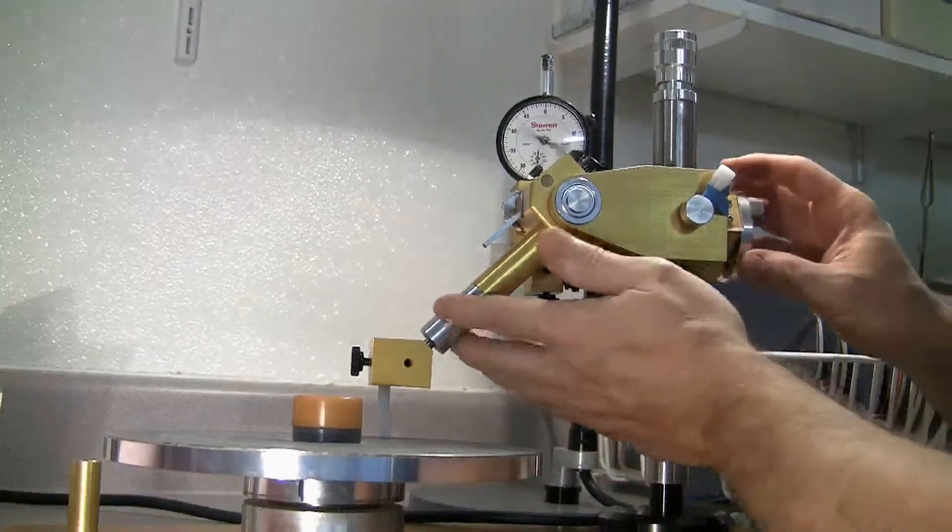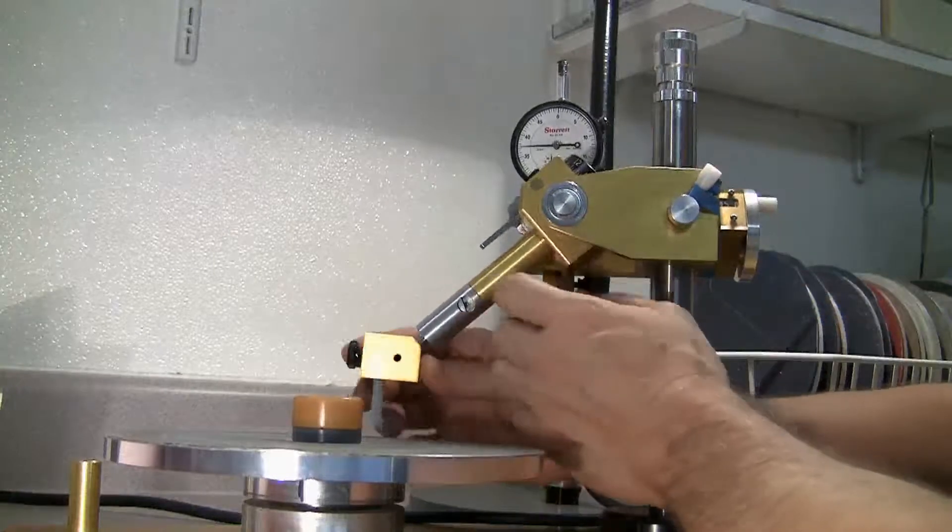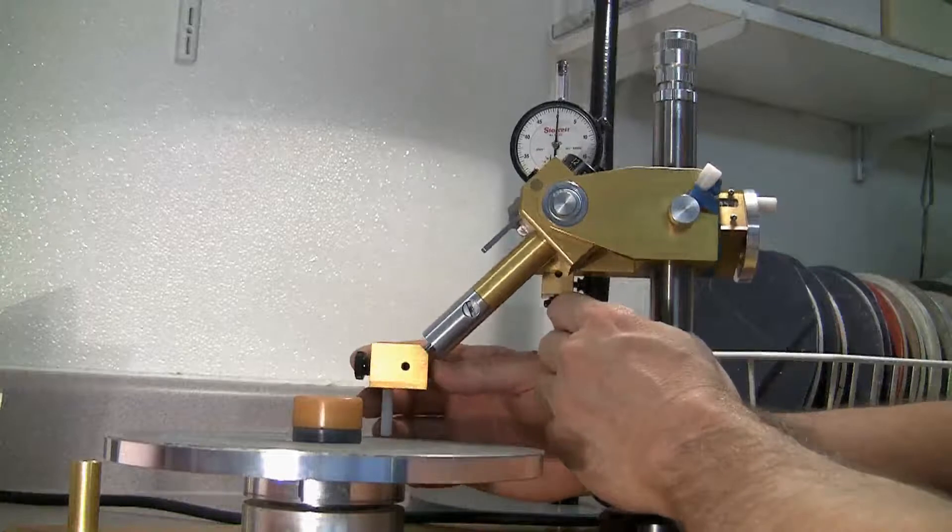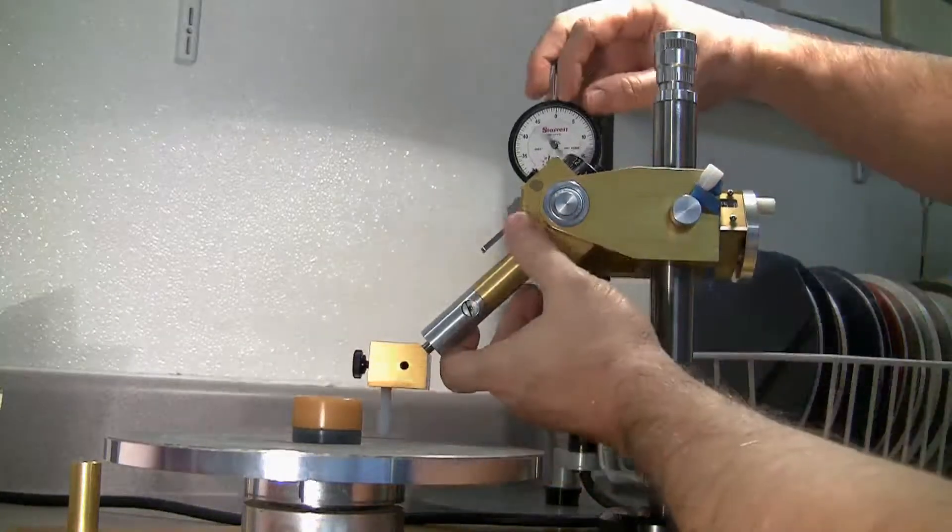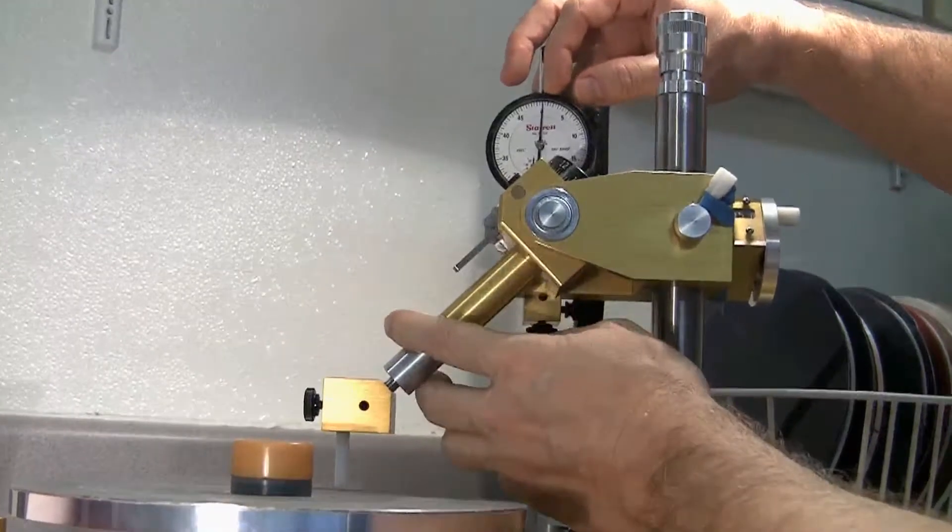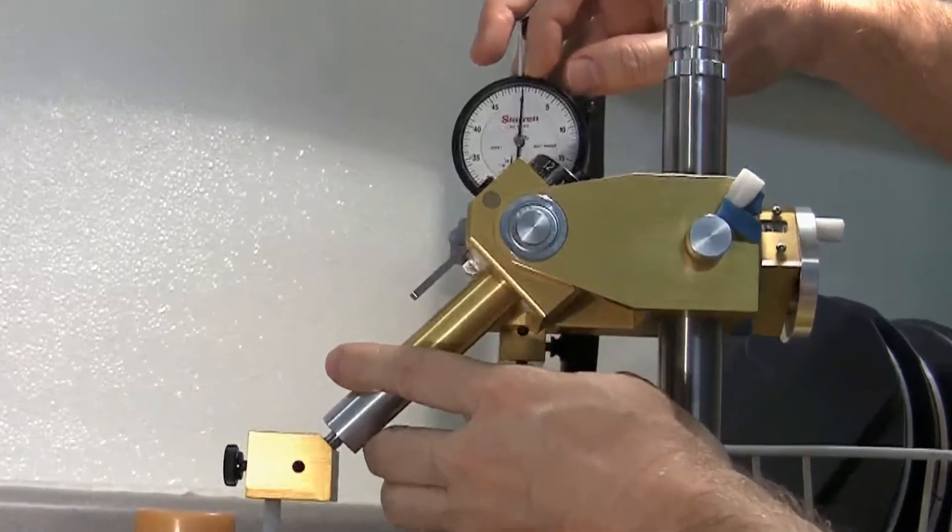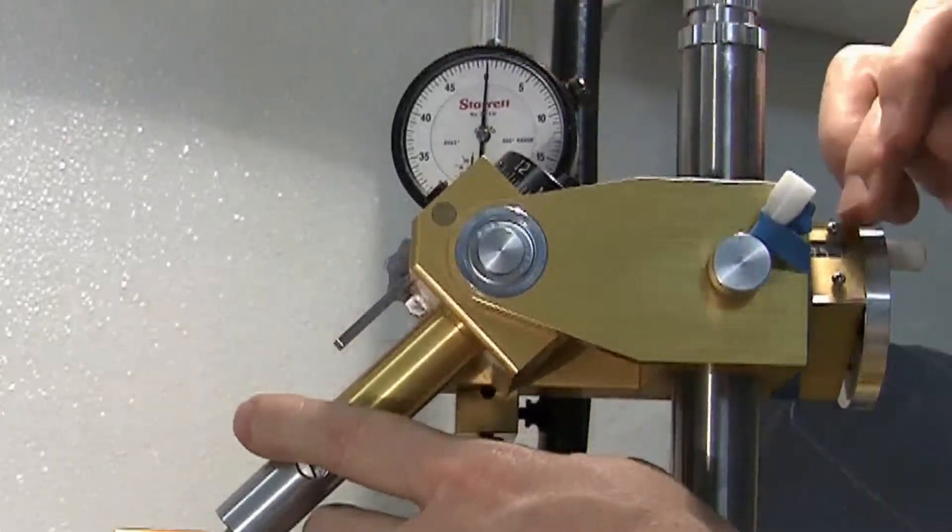Once we've set an angle on our protractor, the hard stop allows us to command the travel of the quill to halt when we reach the angle. We notice the zero point on our dial indicator, we're stopping right at the zero. So we have the hard stop currently set to halt the travel of the quill at 45 degrees.